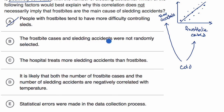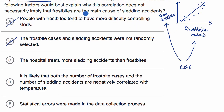The next choice says: the frostbite cases and sledding accidents were not randomly selected. This just speaks to how the data was collected, but it doesn't address the main issue of whether frostbites imply causation of sledding accidents. Another choice says: the hospital treats more sledding accidents than frostbites. That's just a comparison between the two and still does not explain what else could be the main cause of sledding accidents. I would rule both of those out.